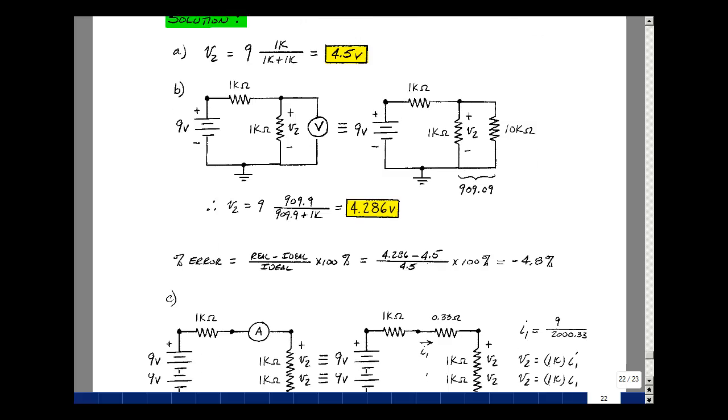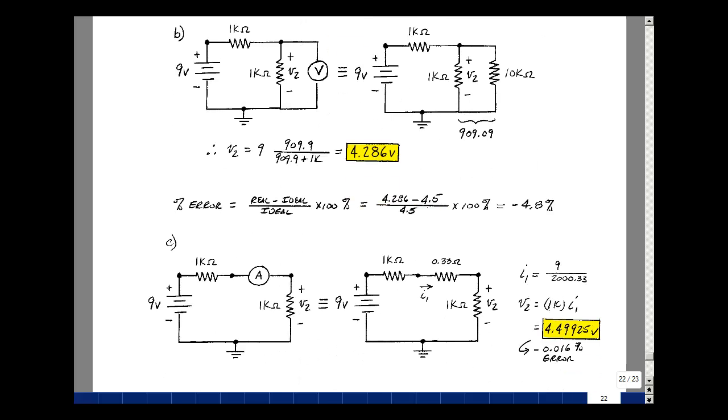Let's use an ammeter and try the same thing. So the ammeter we had in the notes had an equivalent circuit of about 0.33 ohms. This is on page 56.